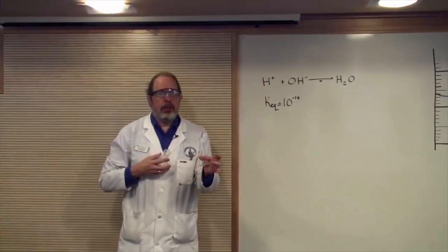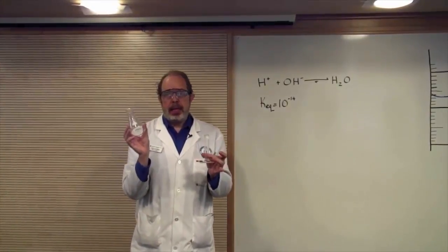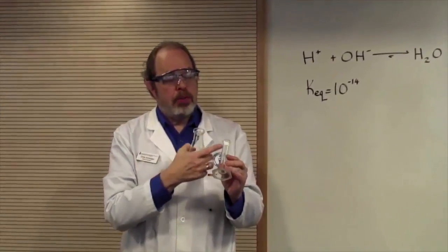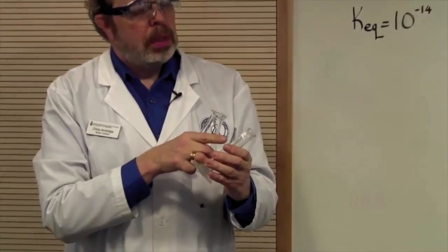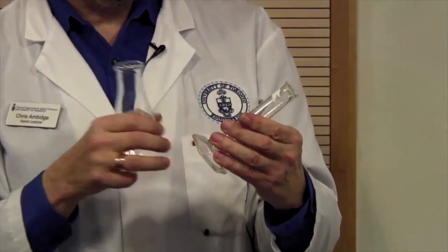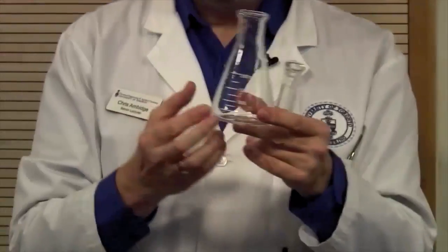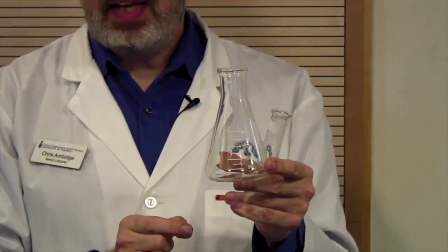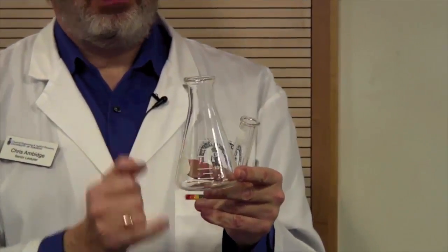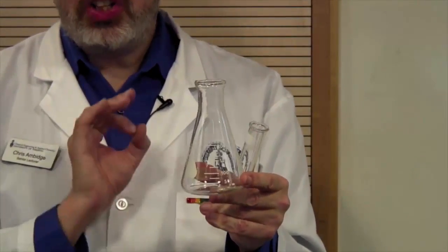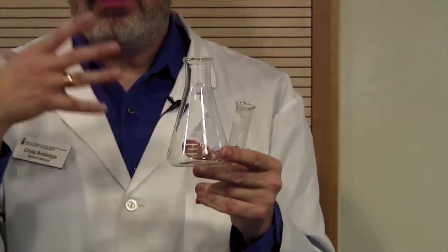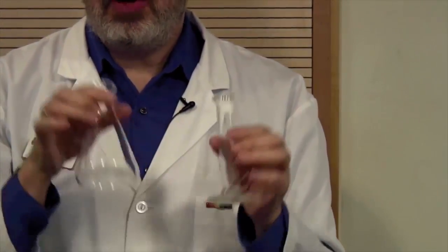For instance, I've got here a graduated cylinder and an Erlenmeyer flask. They've both got graduations on them. This one is about half a mil you can take it to. This Erlenmeyer flask has graduations plus or minus 5%. They're not very accurate.